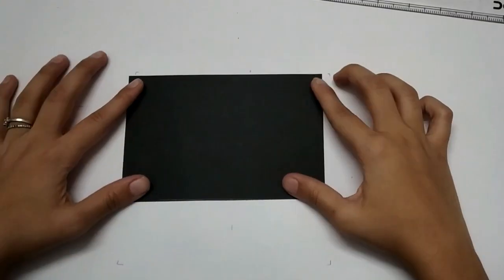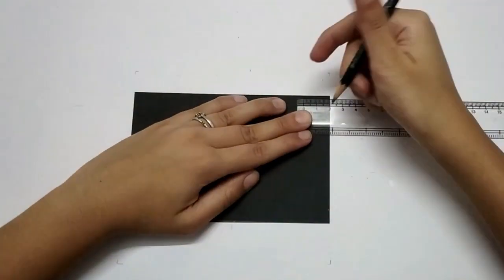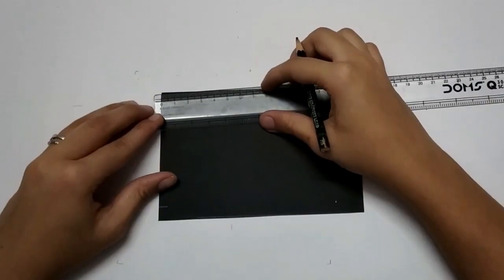Now take black paper. You have to keep 5 cm more from the actual length and breadth. Now mark 2 cm from each side.